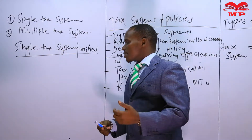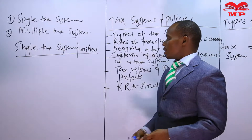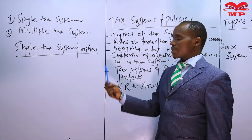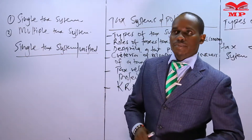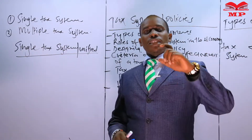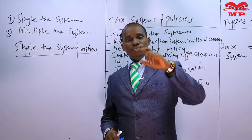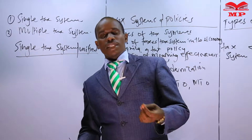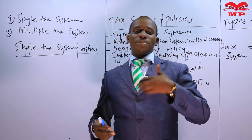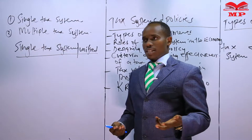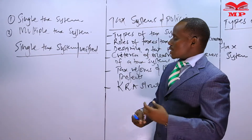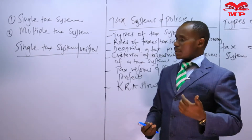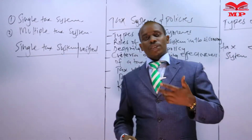A single tax system simply means a situation whereby only one tax needs to be paid by taxpayers to the government. For instance, a country may implement income tax only, paid to the government, or the government can implement a tax like VAT only. So a single tax system means only one tax is paid by taxpayers to the government.